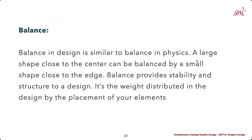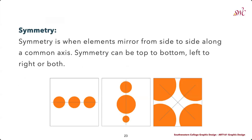Balance provides stability and structure to a design. It's the weight distributed in the design by the placement of your elements. The first principle we are going to review is symmetry, which is a form of balance. Symmetry is when elements mirror from side to side along a common axis. Symmetry can be either top to bottom, left to right, diagonal, or both. We can see symmetry being used in three different compositions by utilizing points as the design element to articulate those.